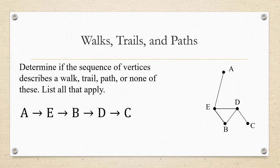Okay, let's look at another one. A to E to B to D to C. We're going from A to E, from E to B, from B to D, and from D to C. Is it a walk? Yes. We stuck to the graph, right? Okay, so we know that it's a walk, and if it's a walk, we also need to check if it's a trail. And we can do that by asking ourselves, were there any repeated edges?